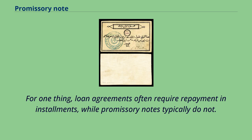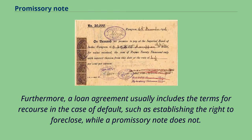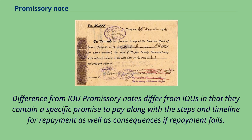For one thing, loan agreements often require repayment in installments, while promissory notes typically do not. Furthermore, a loan agreement usually includes the terms for recourse in the case of default, such as establishing the right to foreclose, while a promissory note does not. Promissory notes differ from IOUs in that they contain a specific promise to pay along with the steps and timeline for repayment, as well as consequences if repayment fails.